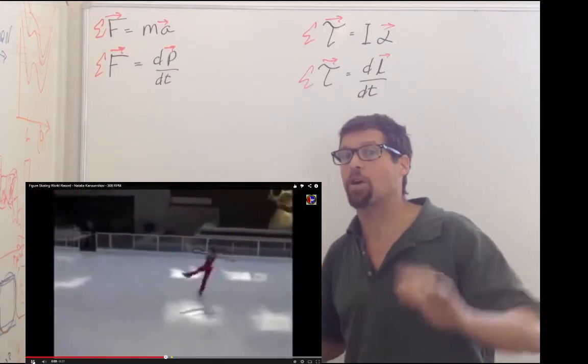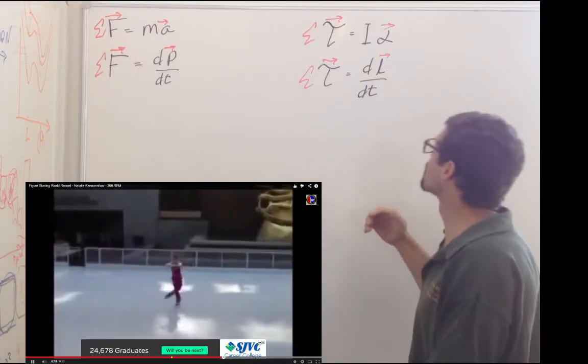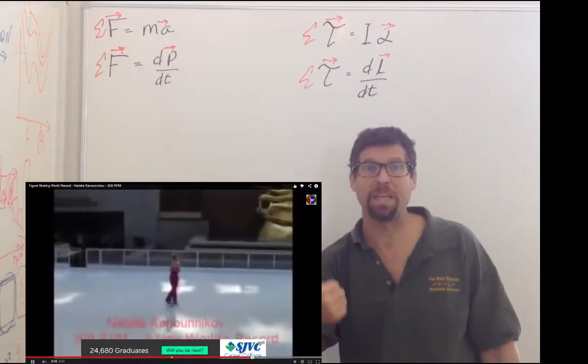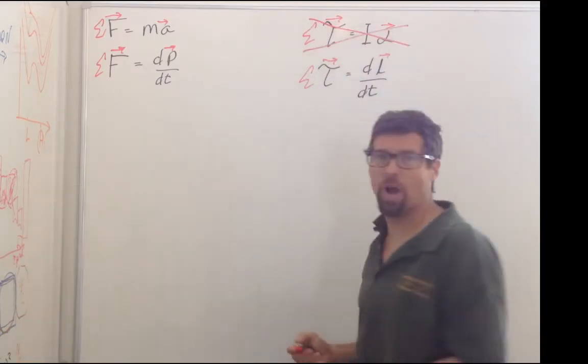Like when the skater switches from a large moment of inertia to a small moment of inertia, her omega, her spinning rate changes incredibly. And so we see this equation just isn't right.